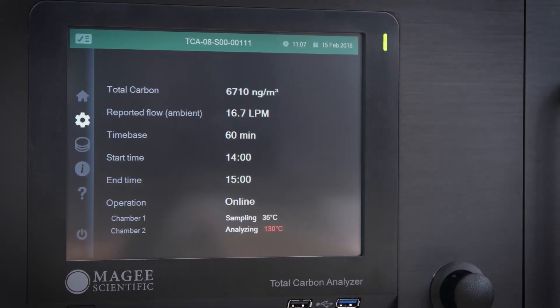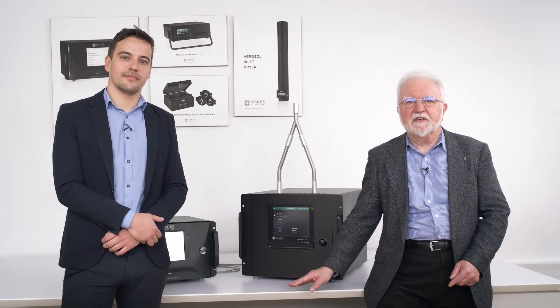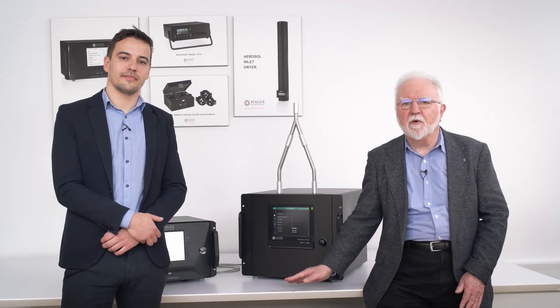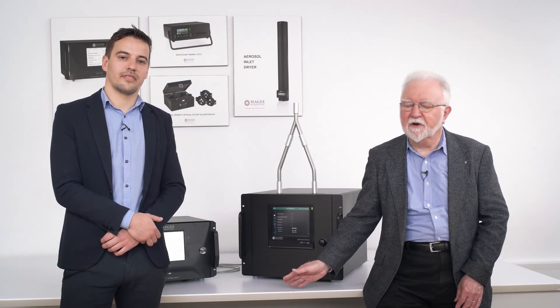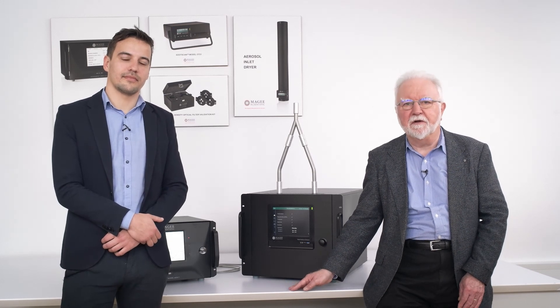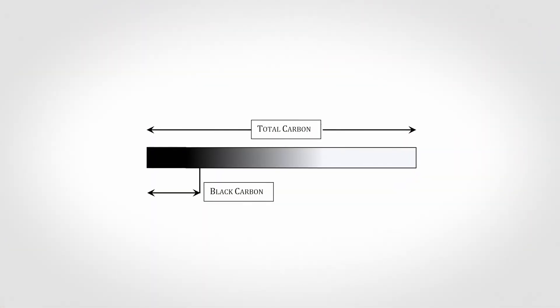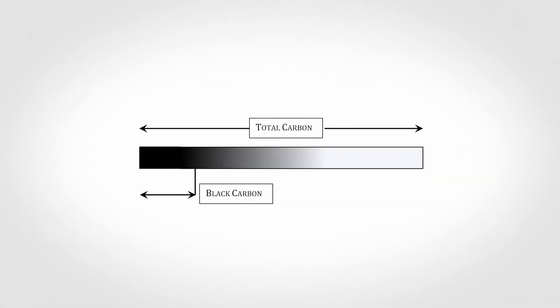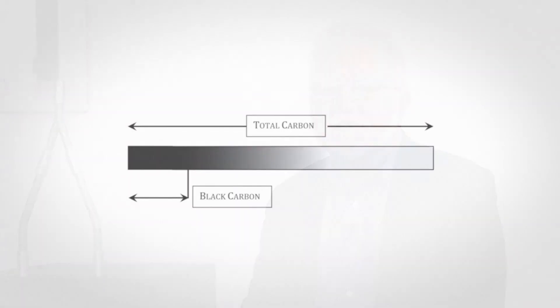The carbonaceous component of ambient aerosols spans a very wide range of compounds, from organic to so-called elemental. This range is actually a continuum. The aethalometer measures the BC or black carbon component, which is closely related to EC. When this is subtracted from TC, the difference is the OC or organic carbon component.